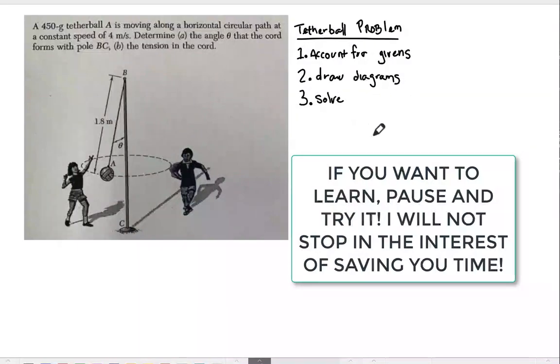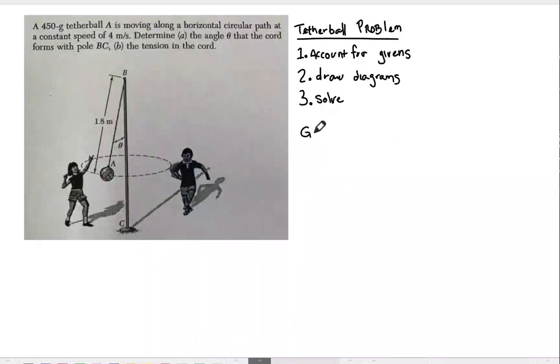Right now I'm writing the three important points, which are we've accounted for our givens. Our mass is 0.45 kilograms, our velocity is 4 meters per second, and our length is 1.8 meters. Our two unknowns are theta and our tension.